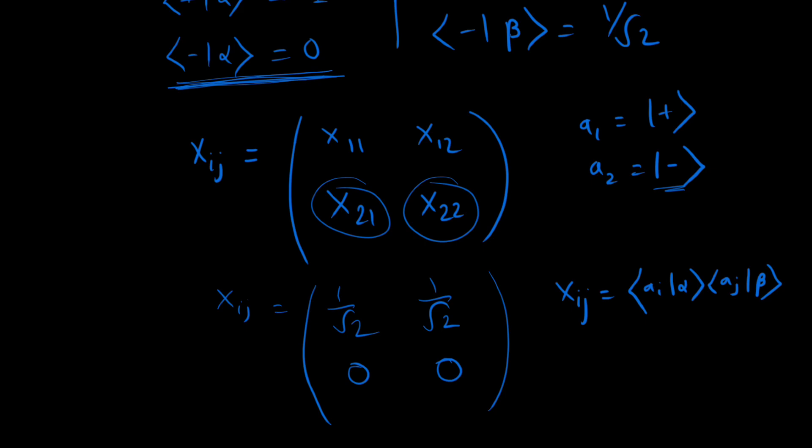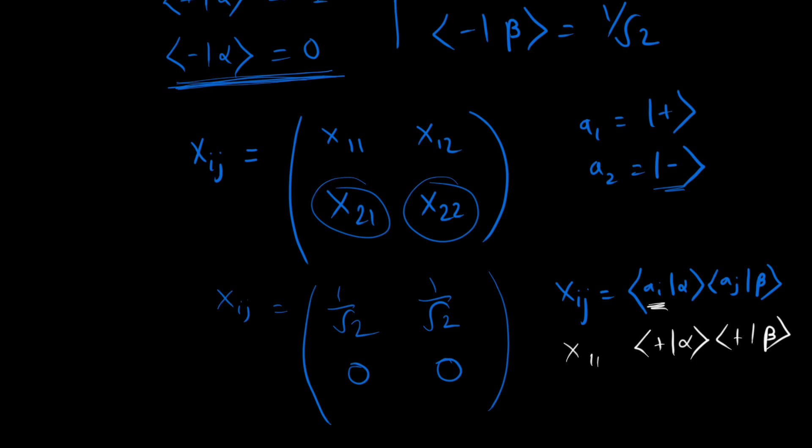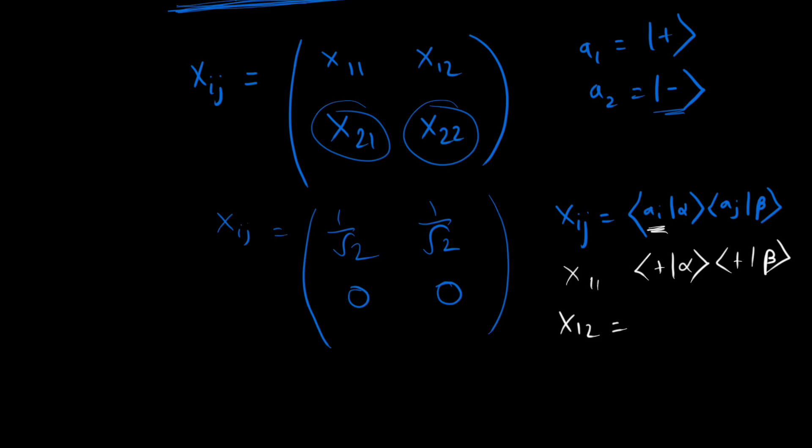So if I put a_i1 here, so a_i1 is just plus, so it will be plus alpha, it will be plus beta. This is for x11. For x12 we have plus alpha, minus beta. For x21 we have minus alpha, plus beta.